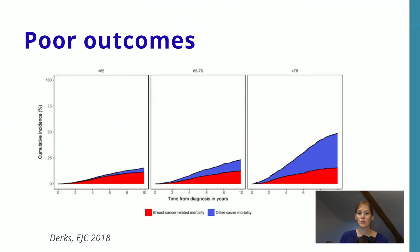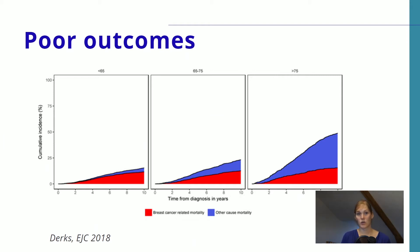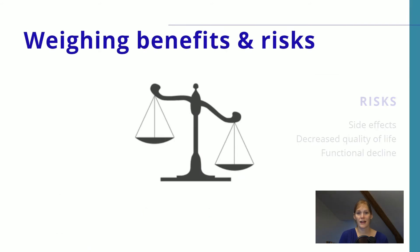In my previous videos, I showed you that the risk of dying of breast cancer unfortunately still increases with age, as is here represented by the red bars. However, the risk of dying of other causes, which is here represented by the blue bars, increases even more with age. This makes it important for us to be able to predict these two outcomes separately, because they can really aid in the decision to treat or not to treat patients with a high or low risk of dying of other causes. In older adults, it's extremely important to weigh the benefits and risks of treatment.